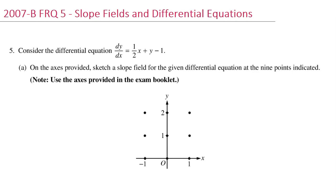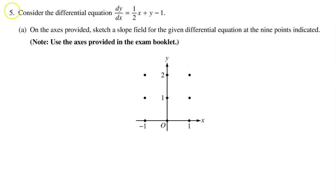In this video, I will walk you through free response question number 5 from the 2007 Form B AP Calculus exam. This problem is primarily about slope fields and differential equations. Consider the differential equation dy/dx equals one-half x plus y minus 1. Part A: On the axes provided, sketch a slope field for the given differential equation at the 9 points indicated.